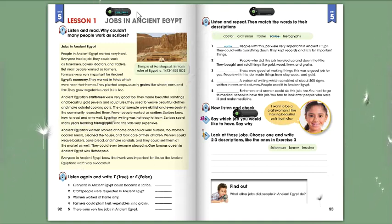Fewer people worked as scribes. Scribes knew how to read and write well. Egyptian writing was not easy to learn. Scribes spent many years learning hieroglyphs, and this was very expensive.